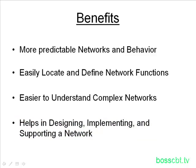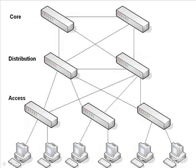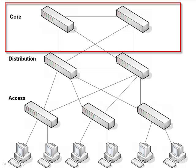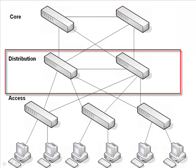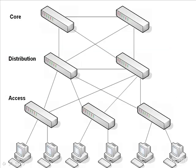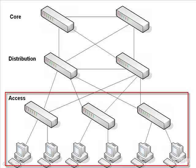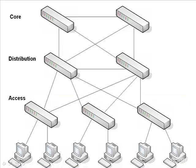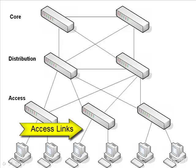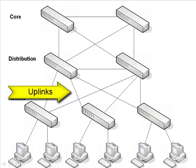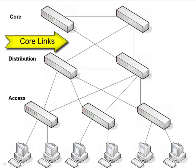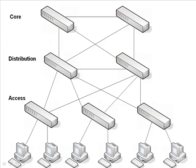So those are the benefits. Let's take a look at the model itself. Here's the hierarchical model. We have a core layer, often referred to as core routers or core switches. Then you have your distribution layer — if you hear 'distribution switch' or 'aggregation switch,' that's often referring to this layer. And finally at the bottom, your access layer with your access switches. The links between them: from the PCs at the bottom those are access links, between the access and distribution layers you have uplinks, and between distribution and core you have core links.